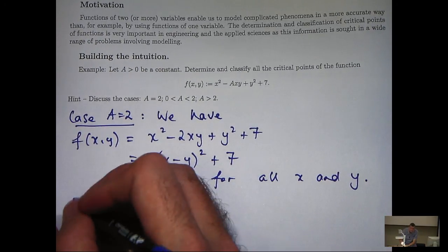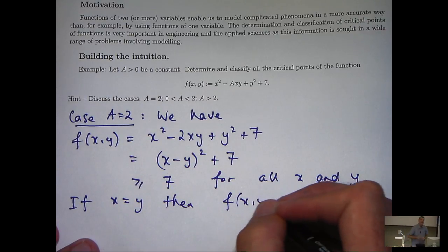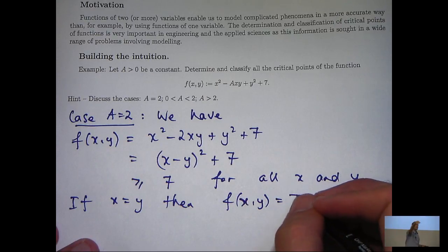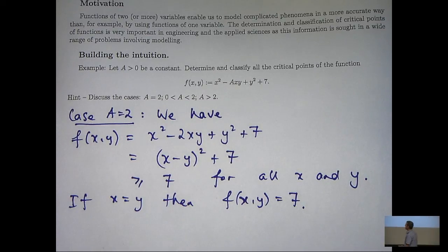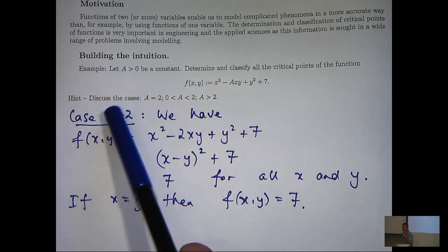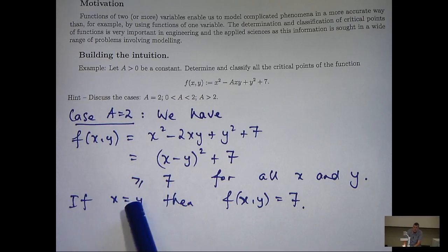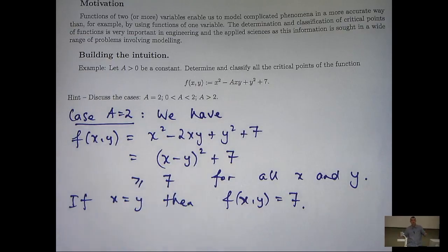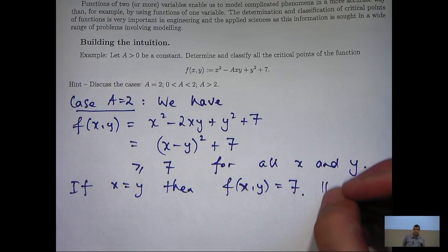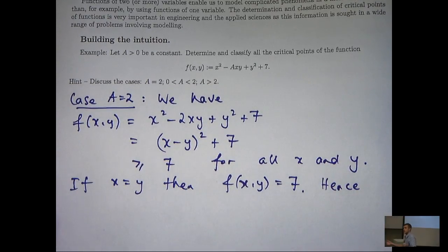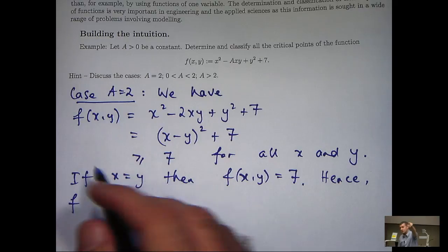Now, in particular, if x equals y, then the 7 is actually achieved. So, what we can say from this, just algebraic manipulation, is that if a equals 2, then f has a minimum along the line x equals y. The minimum value of f is 7, and in particular, it's a global minimum because it holds for all x and y. Now, notice I didn't use any derivatives or any second derivative test there, just basic manipulation.